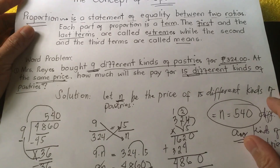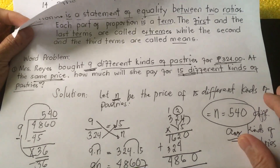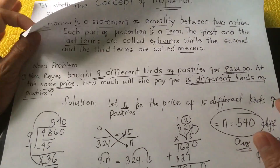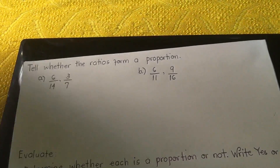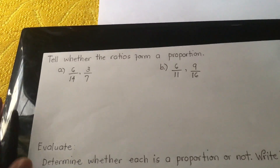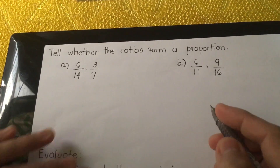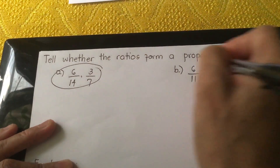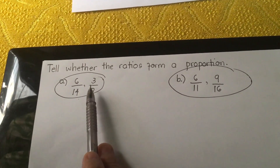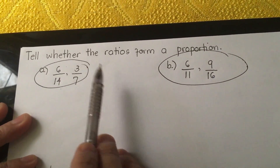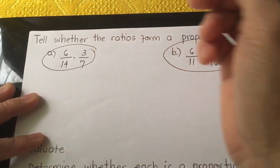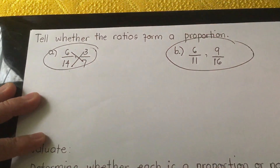Next, we proceed to the next examples. We have problems A and B. In A, we have 6 over 14 equal to 3 over 7, which can also be written as 6 is to 14 equals 3 is to 7. We are going to use cross product multiplication.